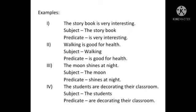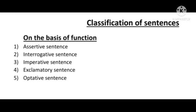In this way, children, we can identify the subject and predicate of a sentence. Now let's see the classification of sentences. On the basis of function, sentences can be classified into five types: assertive sentences, interrogative sentences, imperative sentences, exclamatory sentences, and optative sentences.